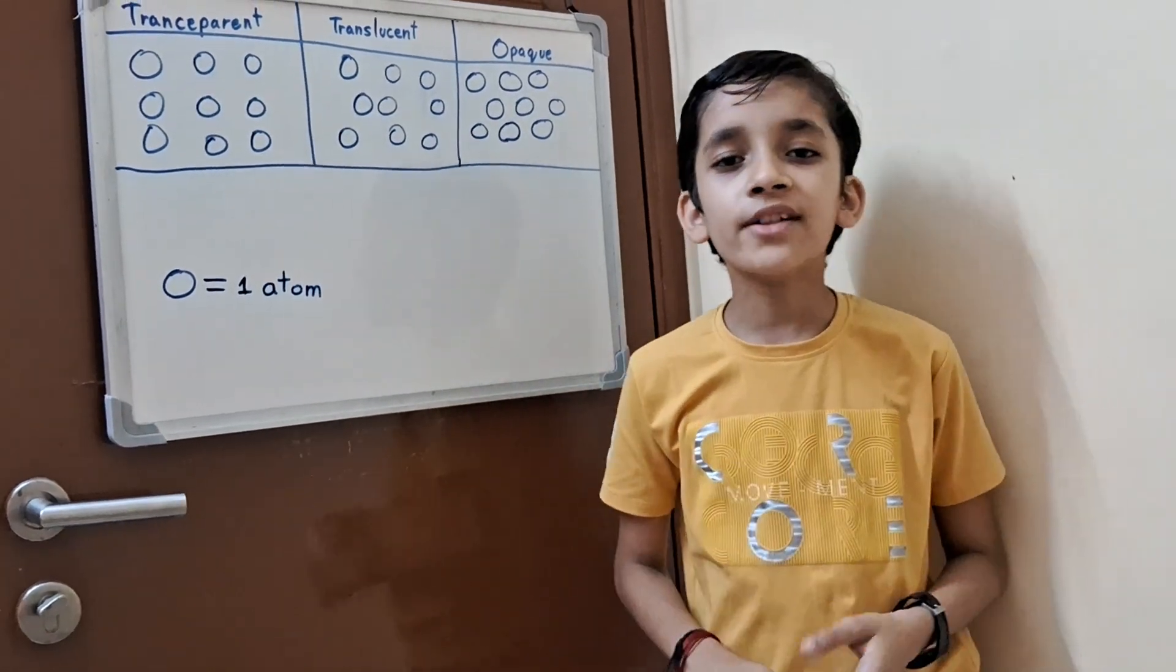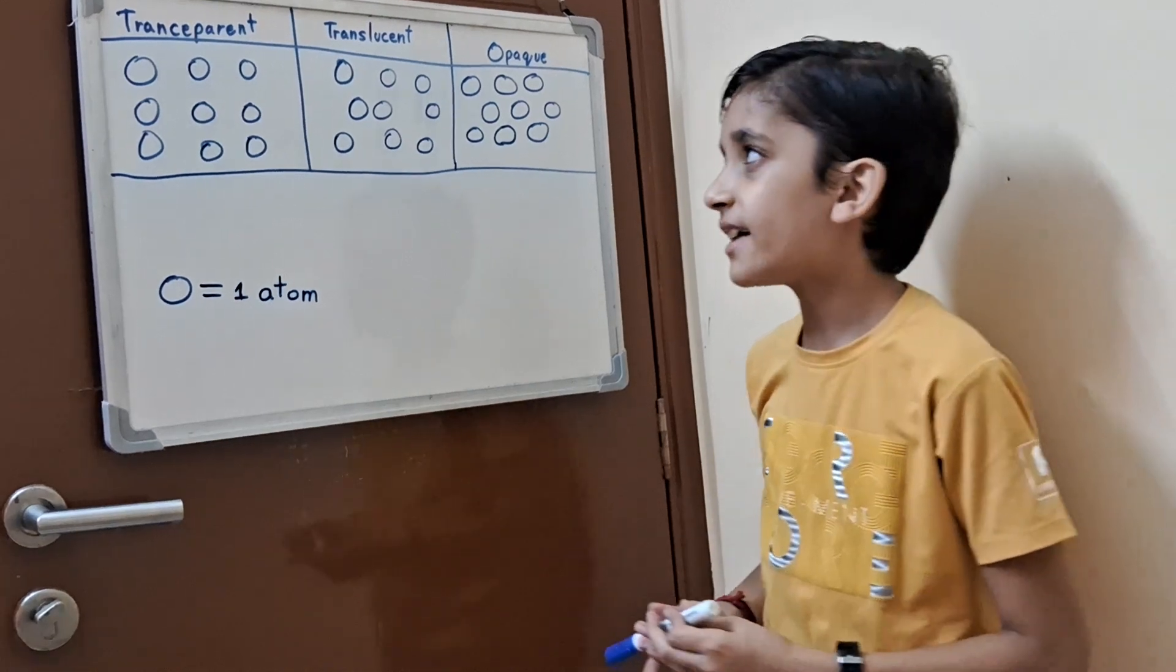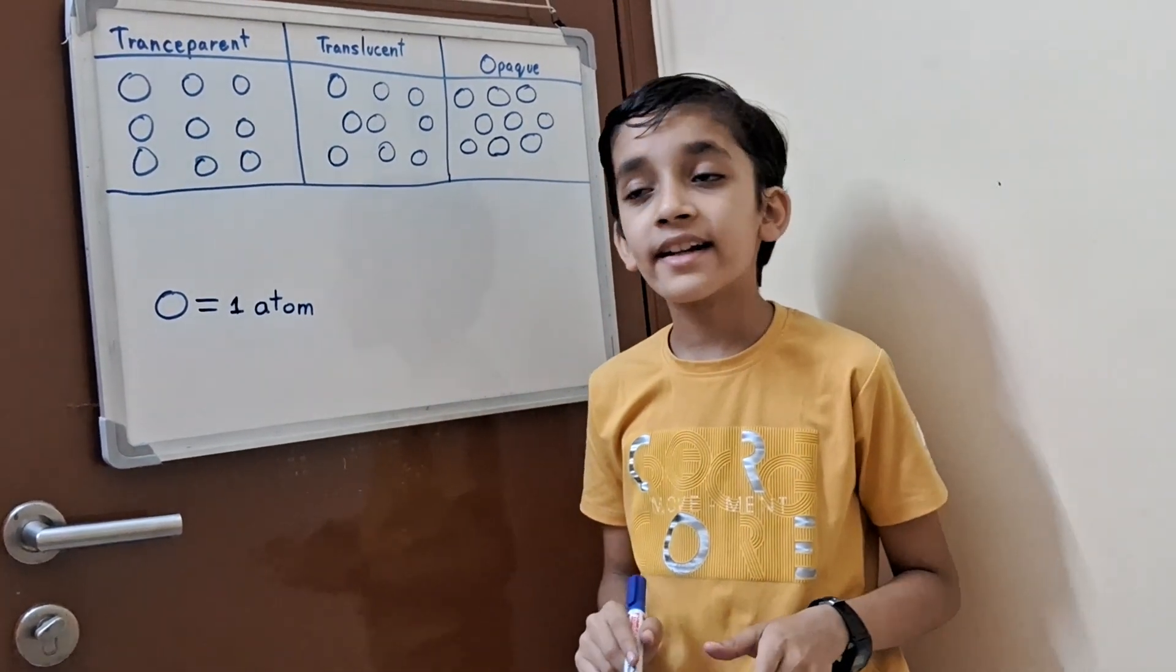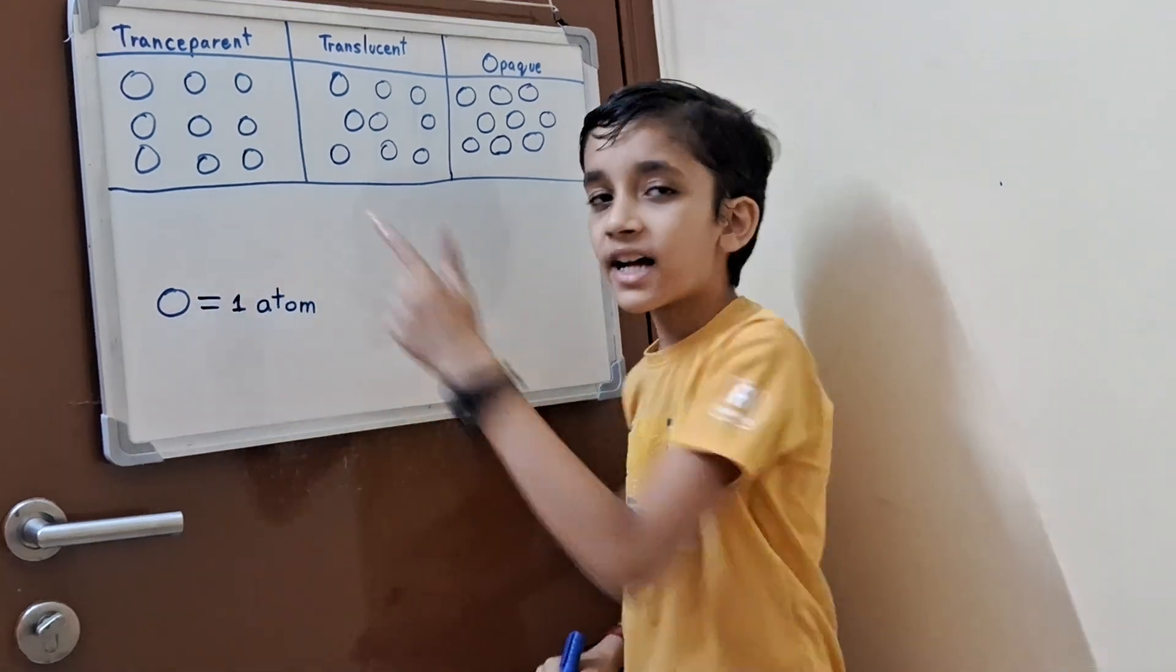Now how are they formed? Let's learn that at the atomic level. First you have to understand that no light can pass through the atoms.